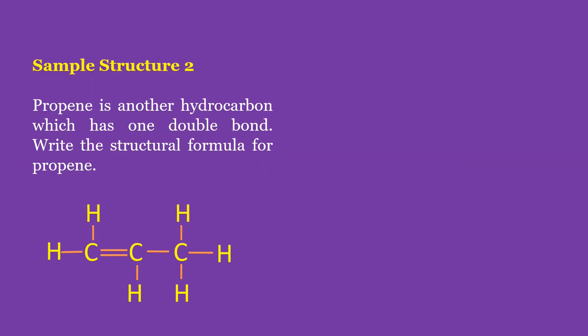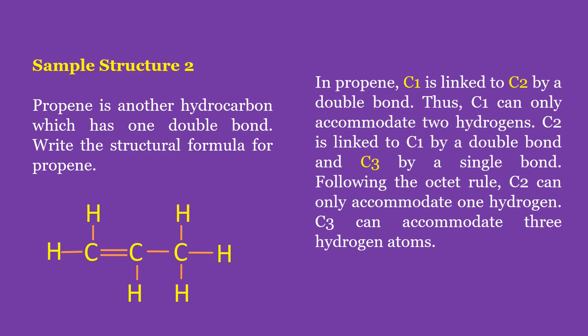In sample structure number two, propene is a hydrocarbon which has one double bond. Carbon number one is linked to carbon number two by a double bond. Carbon number two is linked to carbon number one by a double bond and to carbon number three by a single bond. Following the Octet Rule, carbon number two can only accommodate one hydrogen, while carbon number three can accommodate three hydrogen atoms.